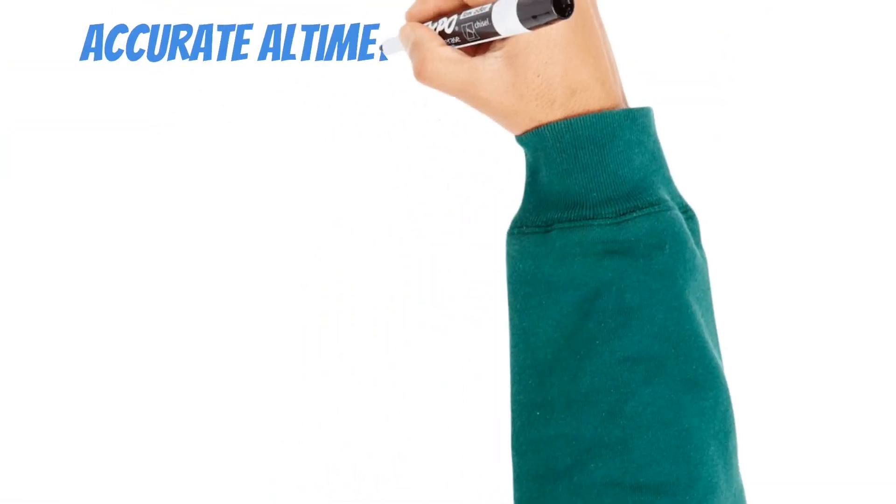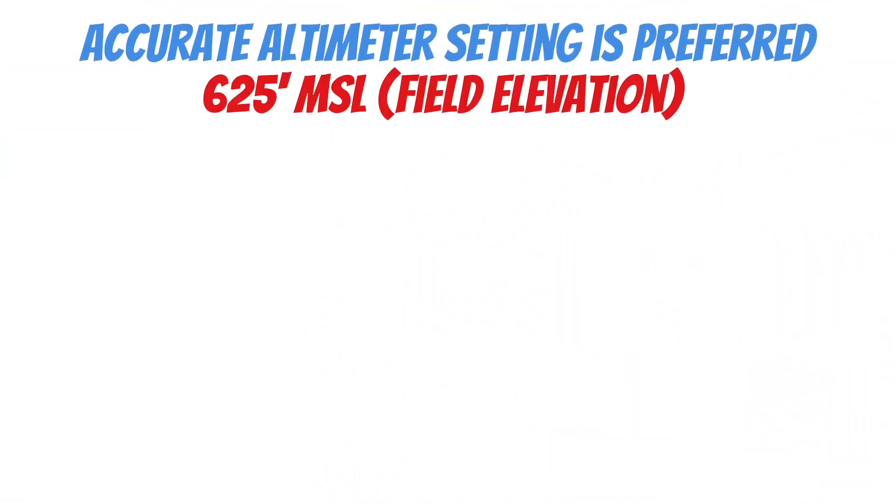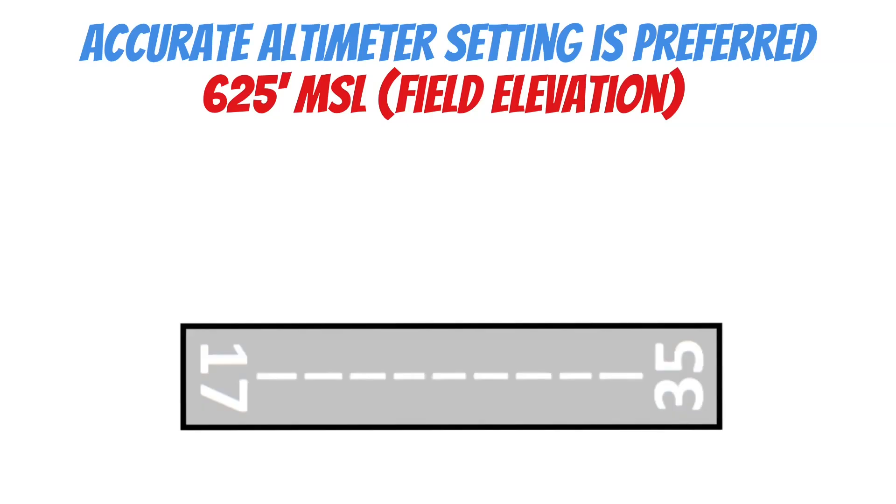That being said, getting an accurate altimeter setting is the preferred method. And that's because, in order to be accurate with the other method, you need to know the exact elevation of that spot you're sitting on when you make the adjustment.